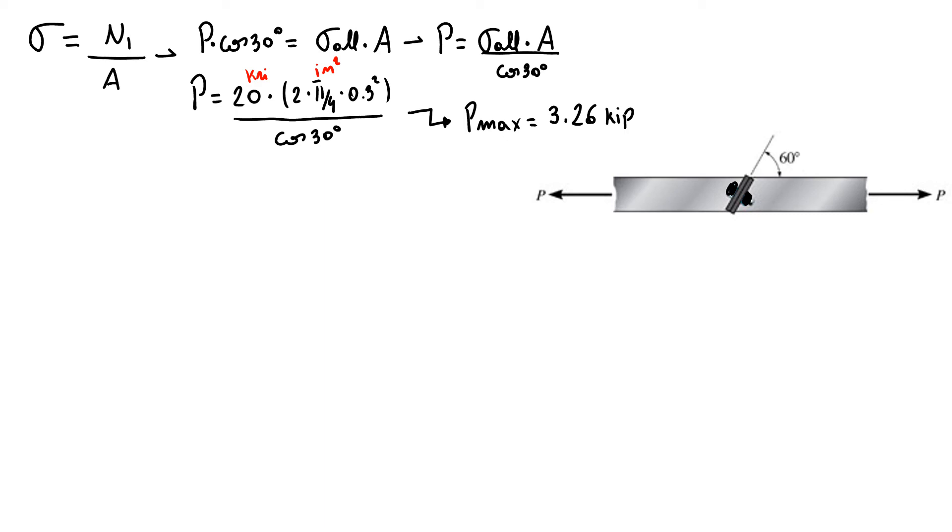Now doing the same process but for shear stress equals shear force over area. My shear stress is V1 times sine of 30, which is the same as τ times area. So P here equals shear stress times area over sine of 30. So we have P equals 12 KSI times 2π over 4 times 0.3 squared over sine of 30. So here our P value is 3.39 kip.